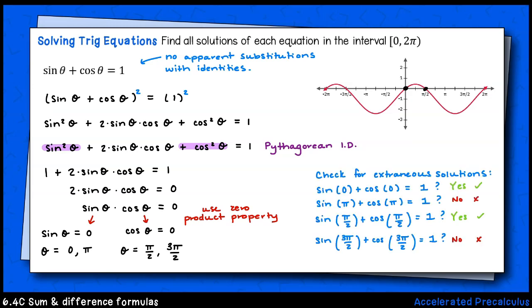We can check for extraneous solutions algebraically by substituting each of our solutions back into the original, unchanged equation. We can also graph the original equation set equal to zero and look for x-intercepts on the interval zero to two π.